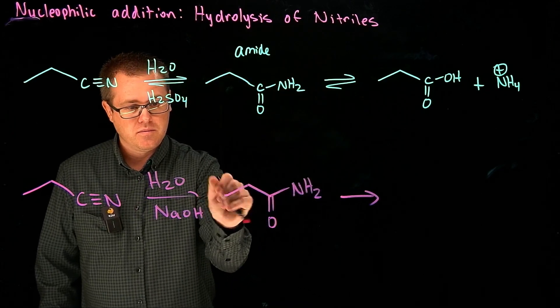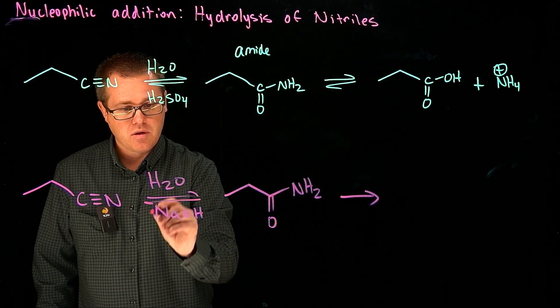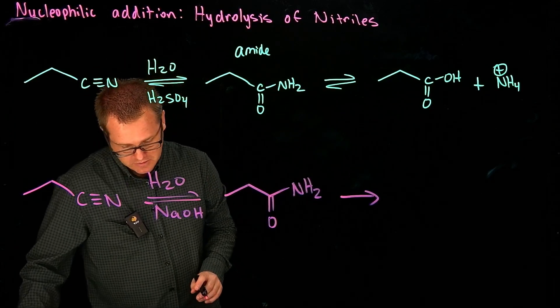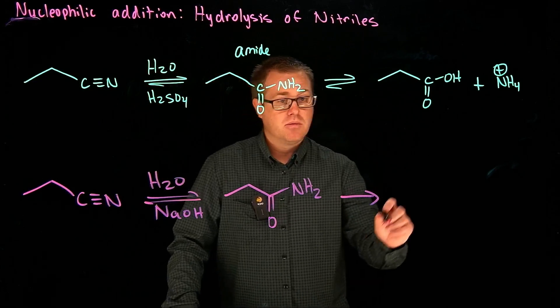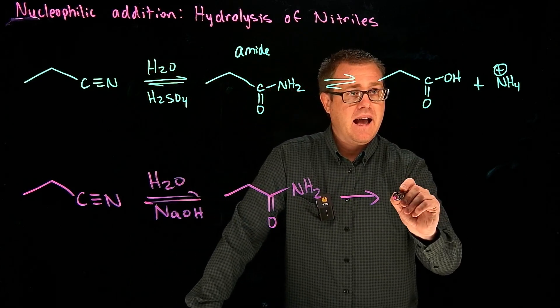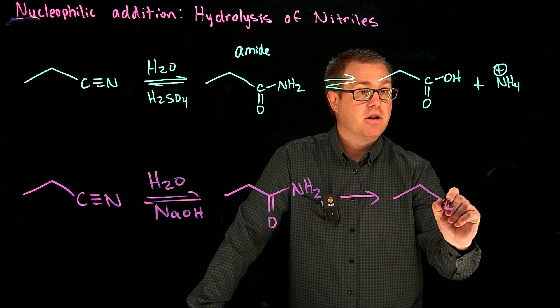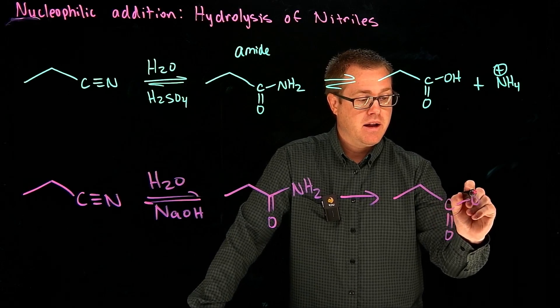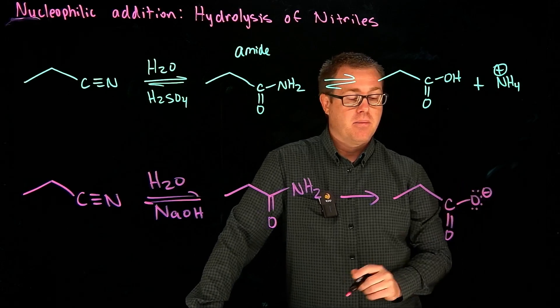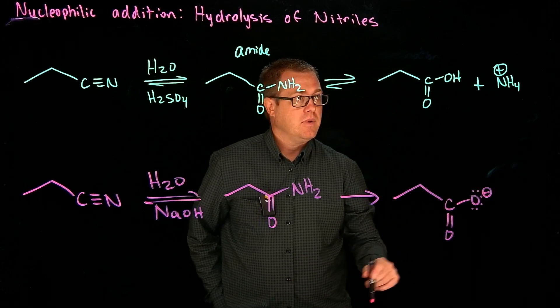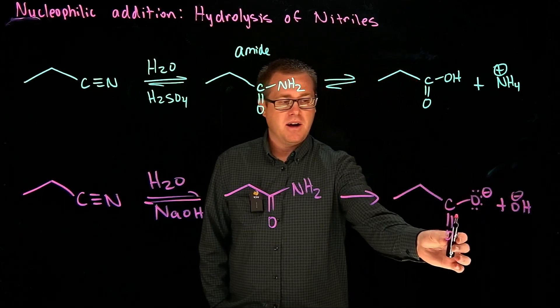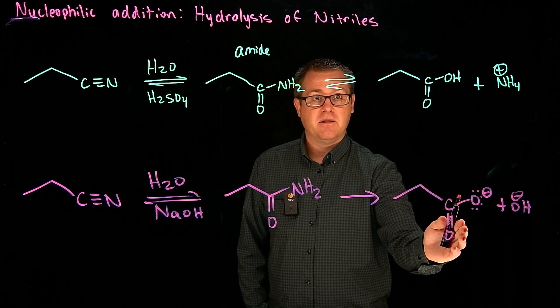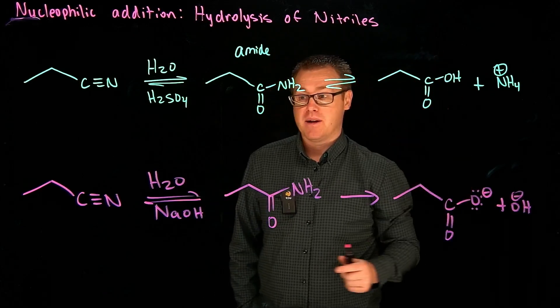if you continue to leave it in these acidic conditions, you will then not form the carboxylic acid, but a very similar species, you would generate the carboxylate. And then if you generate the carboxylate, you could take that and just add a little bit of acid to it, and then you'd get your carboxylic acid.